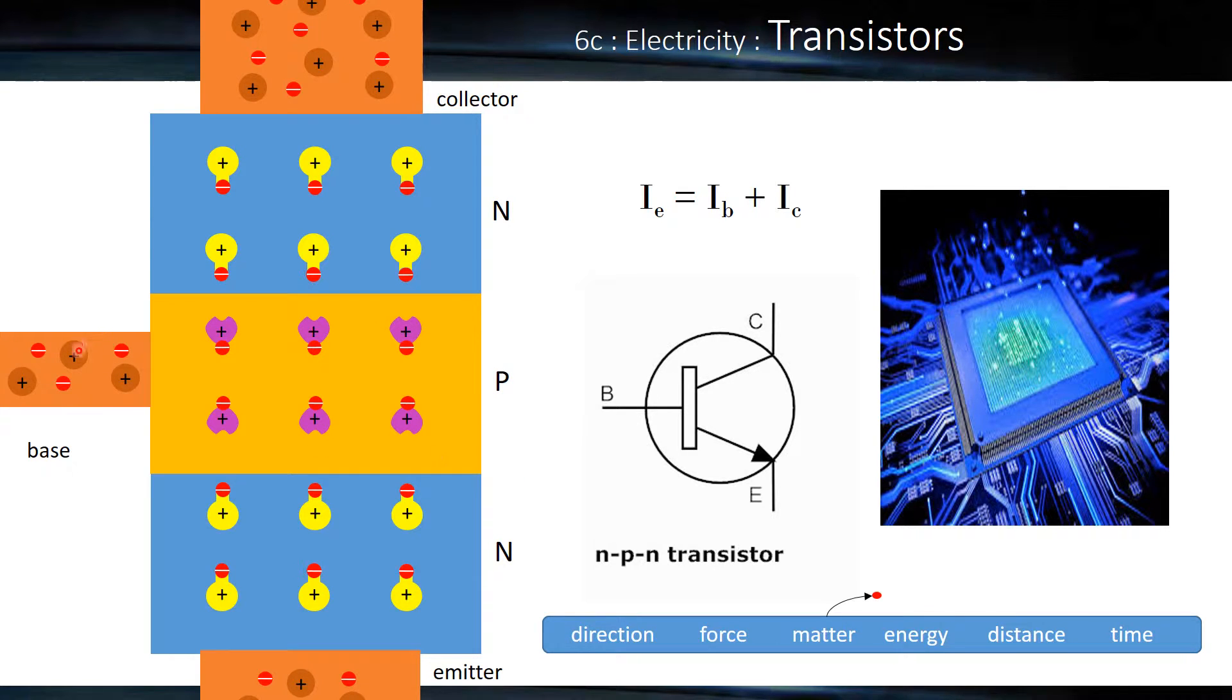It's controlled on the left here by the base current and has two other electrical contacts. It's made of three tiny sections called N for negative, P for positive, and N for negative again. These are all made of silicon but they have special additives introduced to them that change their electrical properties.